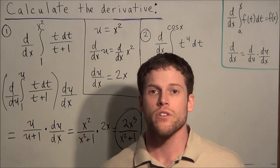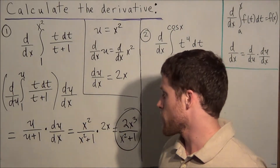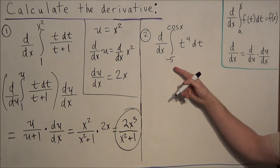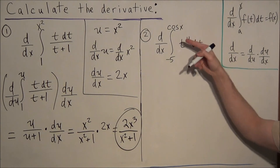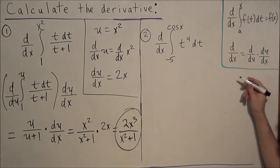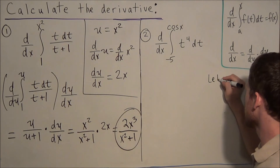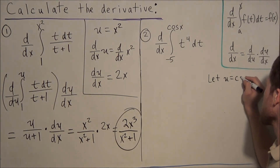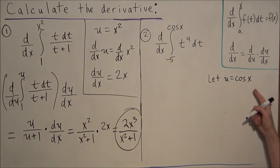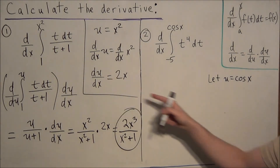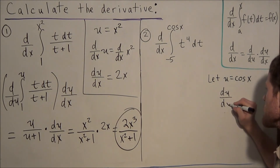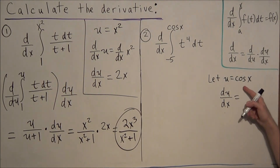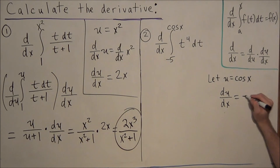For our second integral, we'll do something very similar. We have the same problem — a constant in the lower limit and something other than x in the upper limit, which is cosine of x. So we let u equal cosine of x, and take the derivative with respect to x of both sides. The left gives du/dx, and the derivative of cosine of x gives negative sine x.